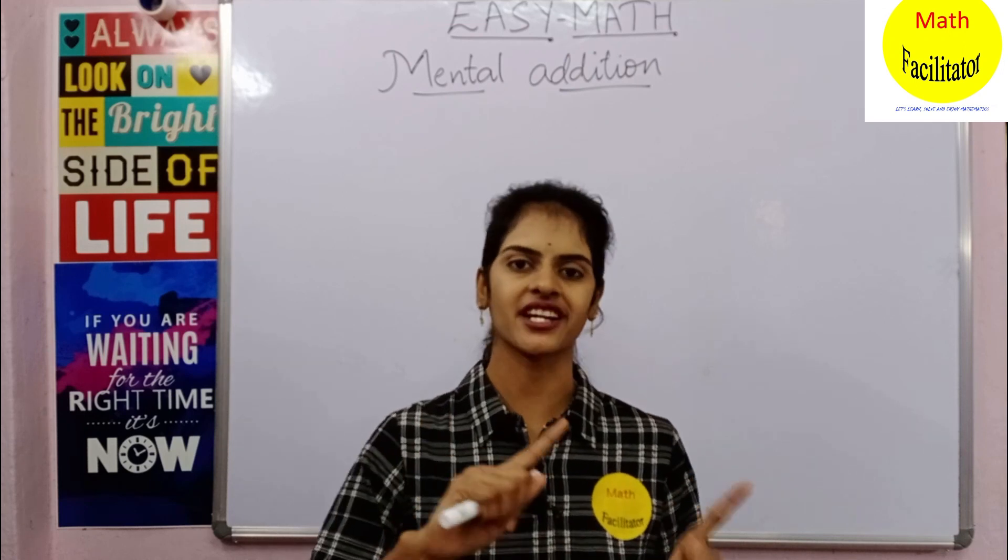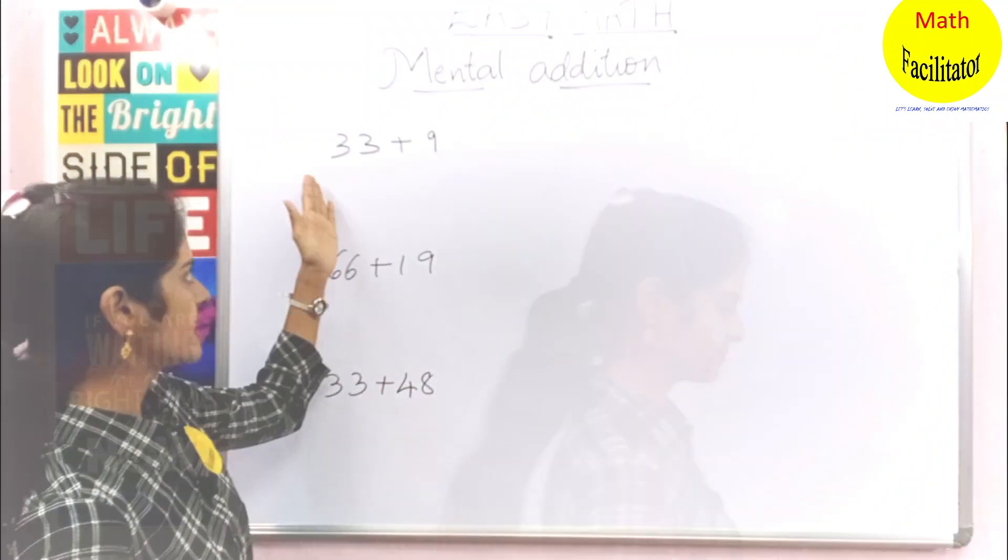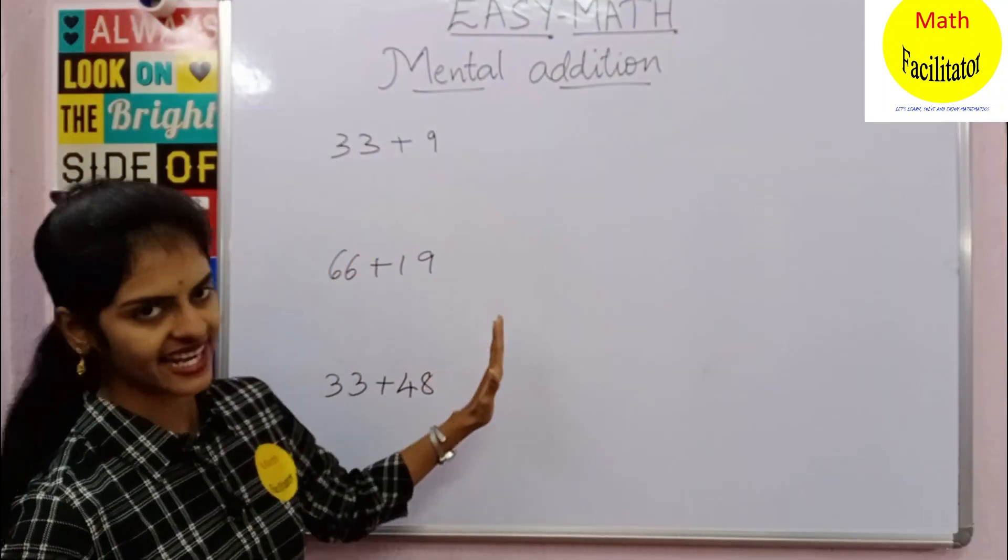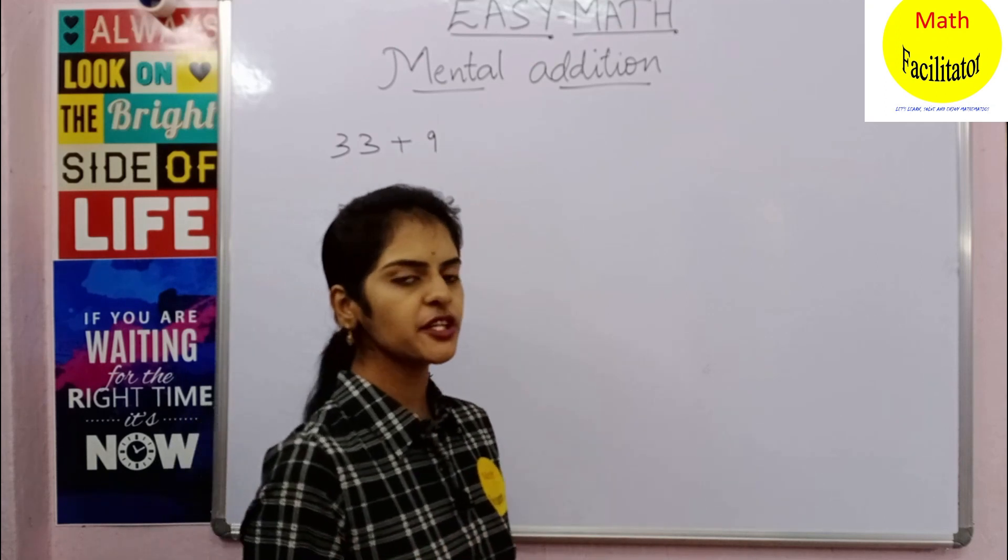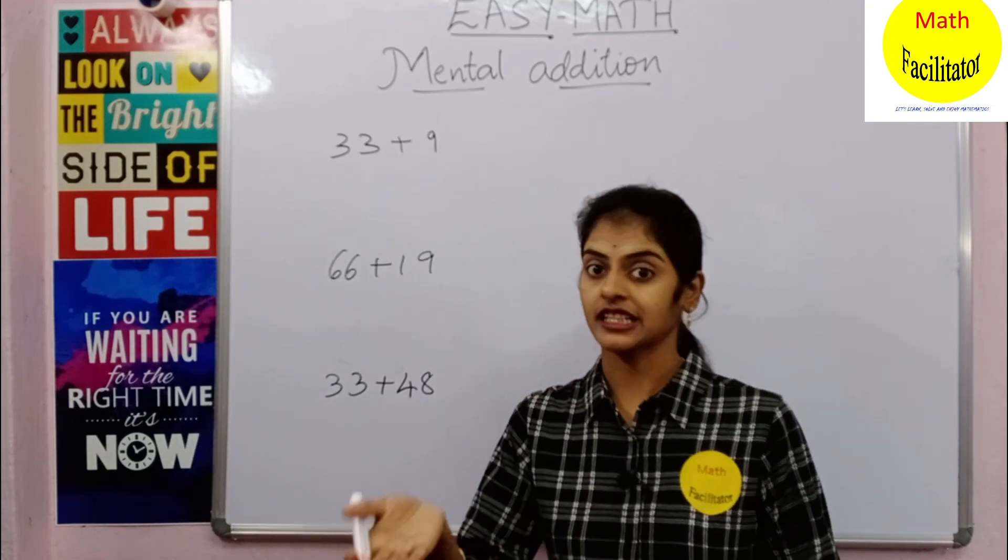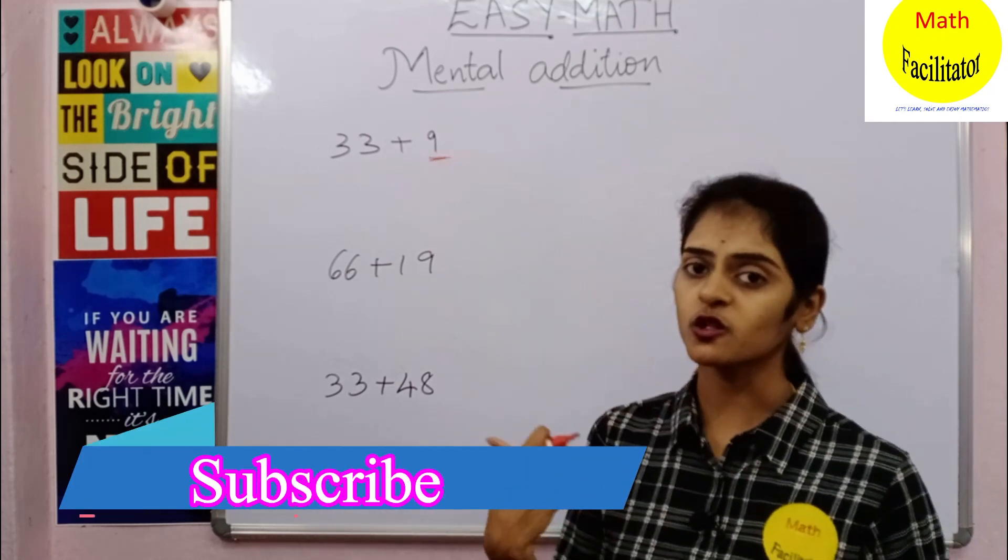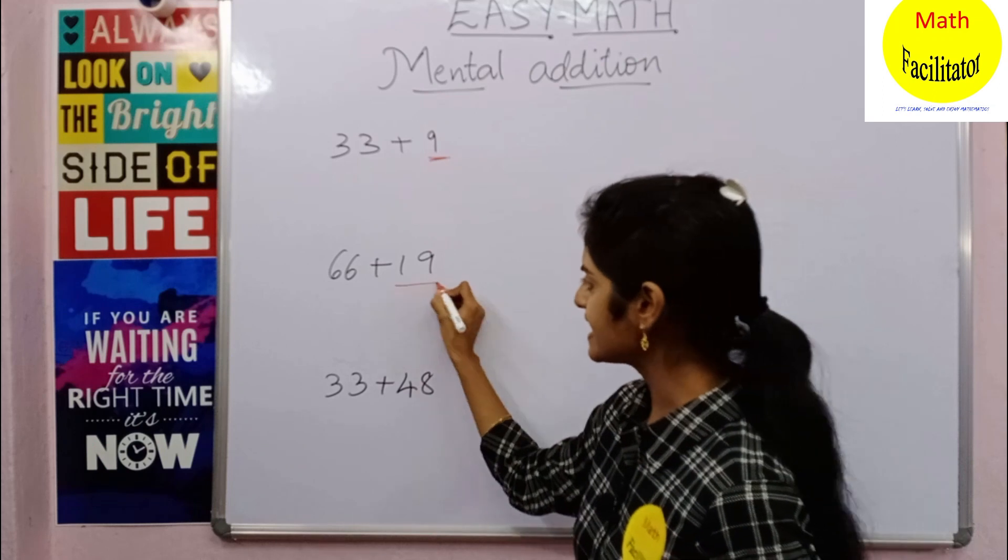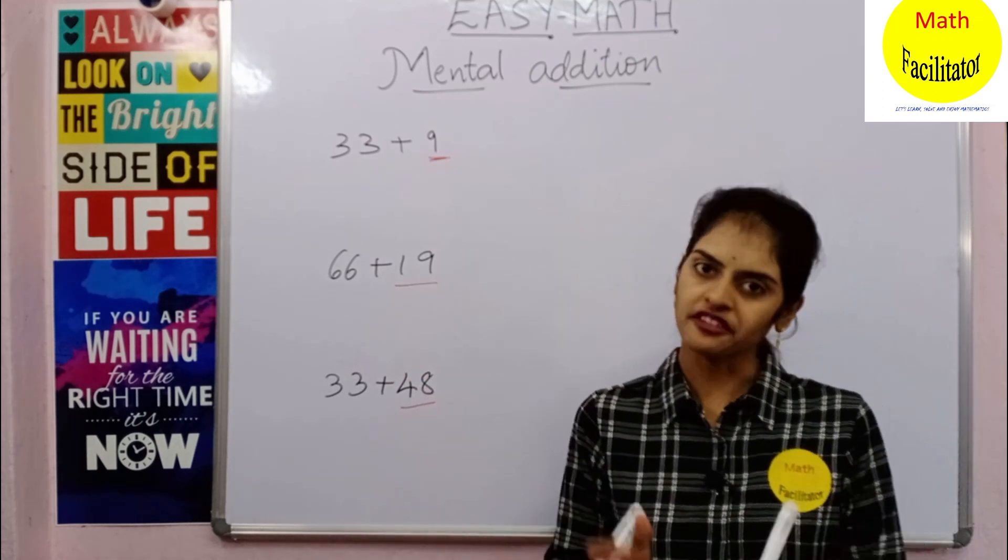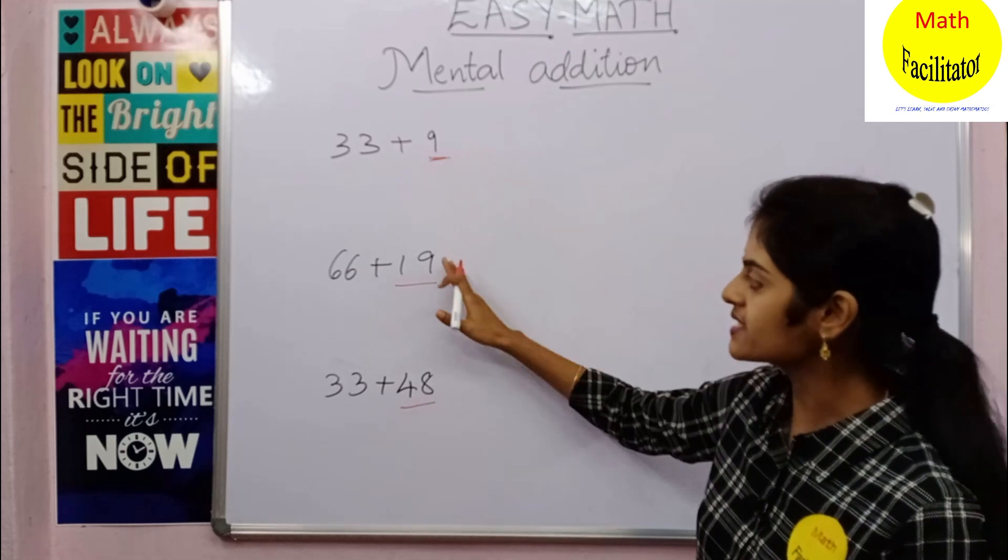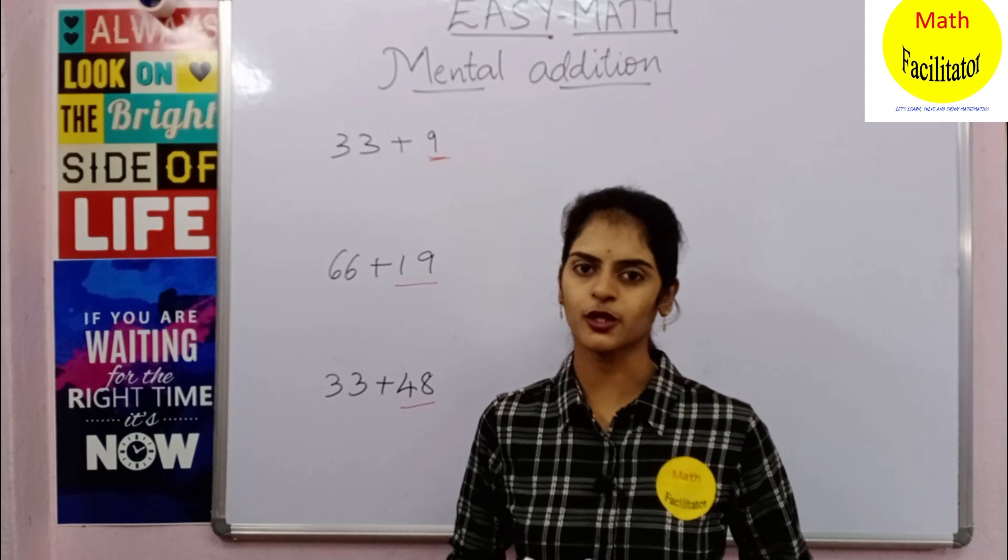In this video we are going to discuss the method of addition by addition and by subtraction. Let us take few examples: 33 plus 9, 66 plus 19, 33 plus 48. Whenever you find numbers as multiples of 10 or close to multiples of 10—9 is close to 10, 19 is close to 20, and 48 is close to 50—then there is an easy method to add.